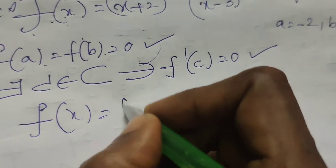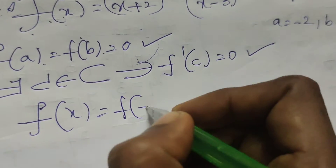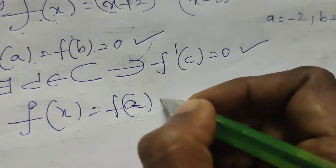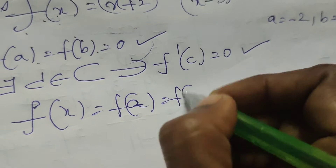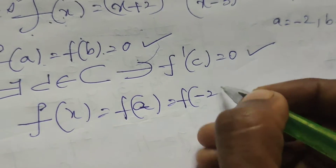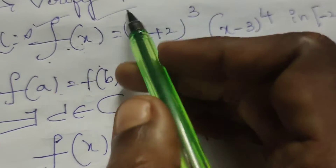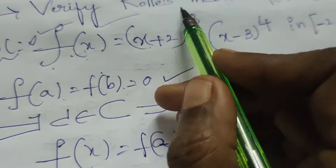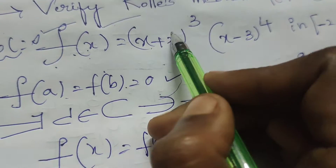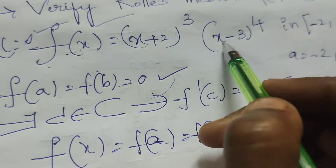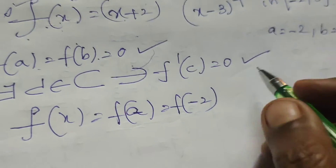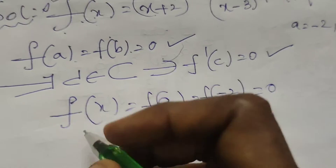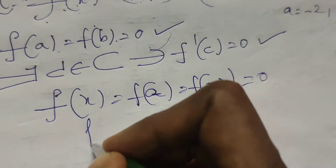Calculate f(a) = f(-2). Substituting x = -2 gives 0, and 0 times the other term is 0. So f(-2) = 0.